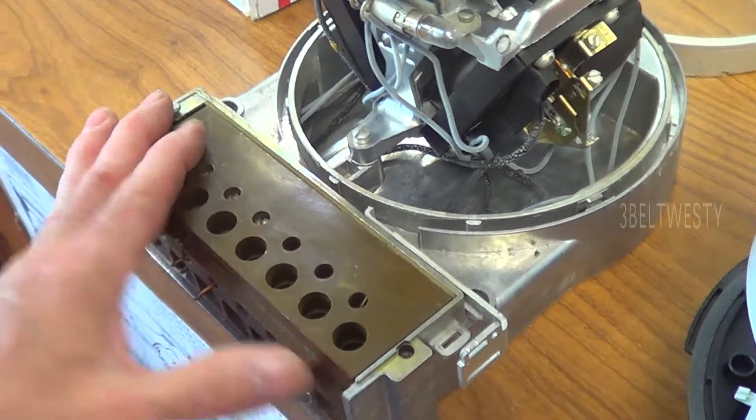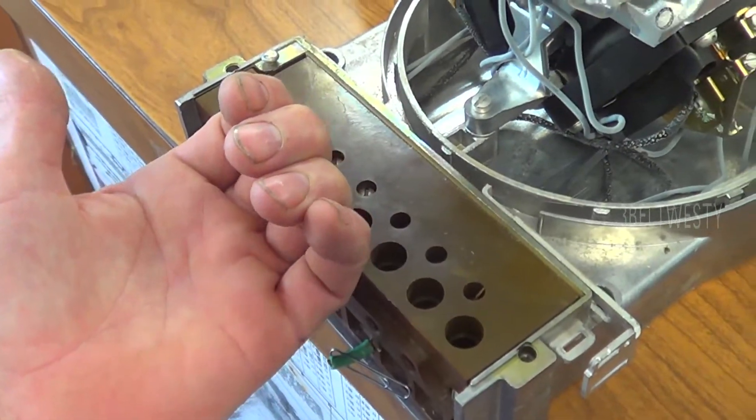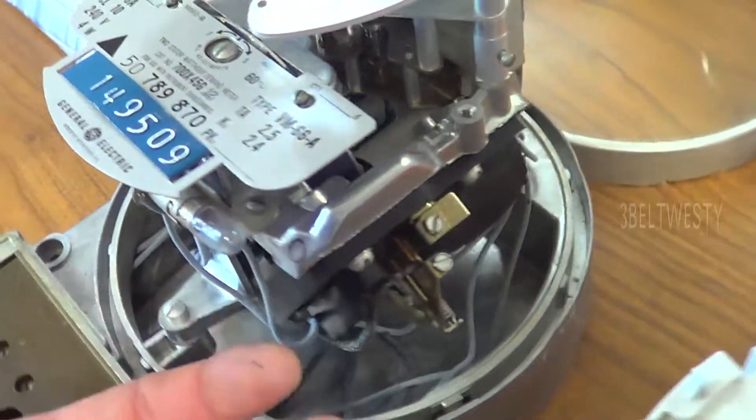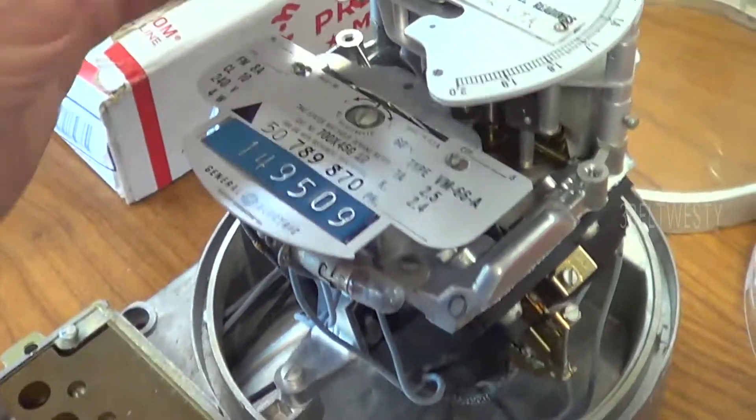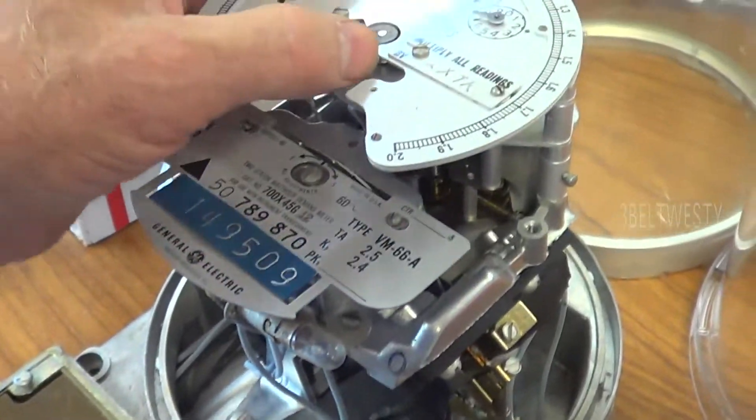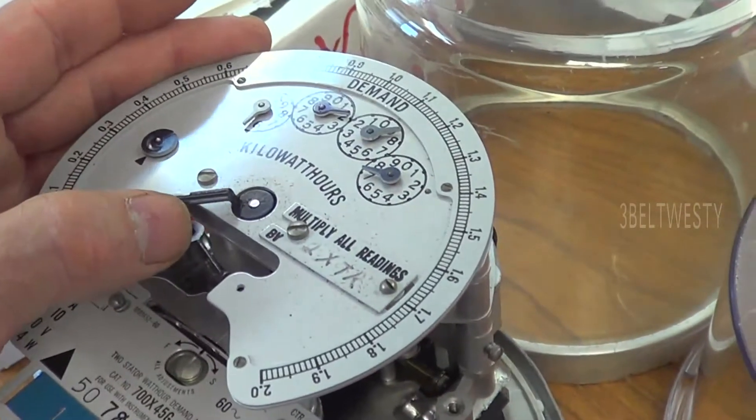The class 10 meant that this is only 10 amperes for the current portion because this is designed for current transformers. You've got a current transformer over here that generally is say 200 amps to 5 amps and then the 5 amps goes into here on each phase.